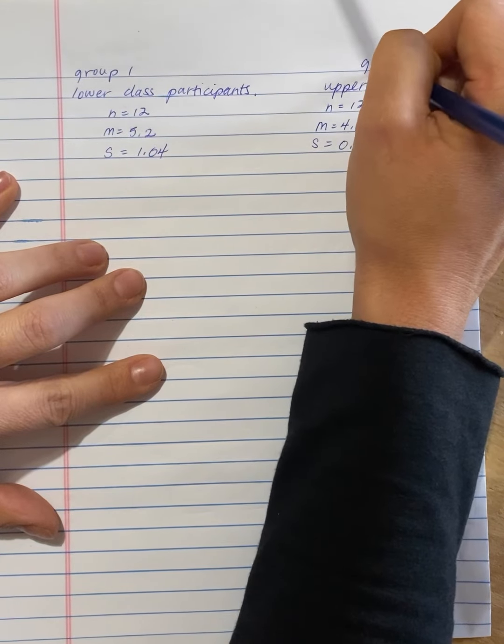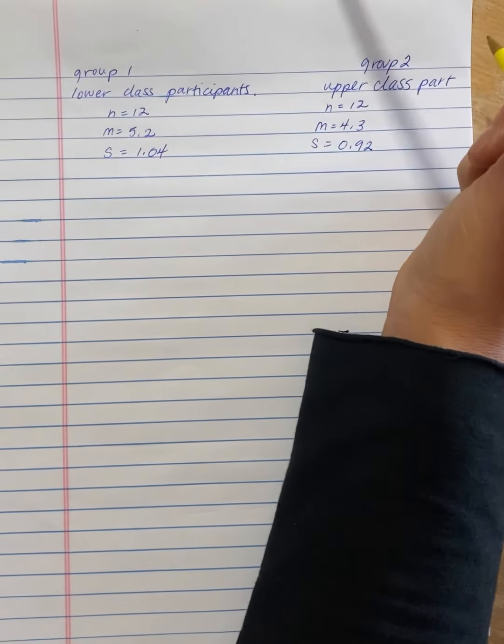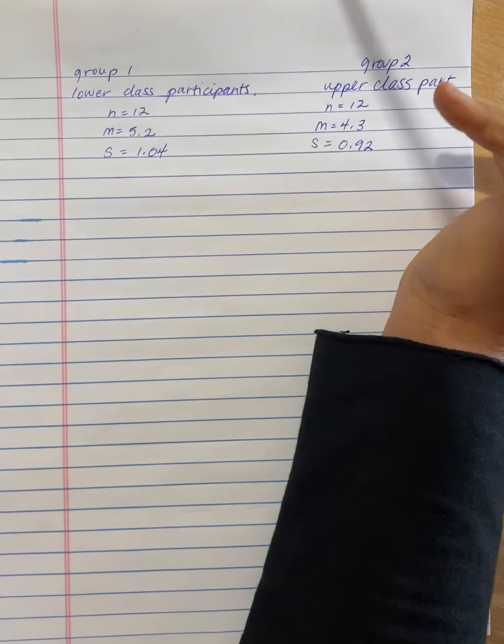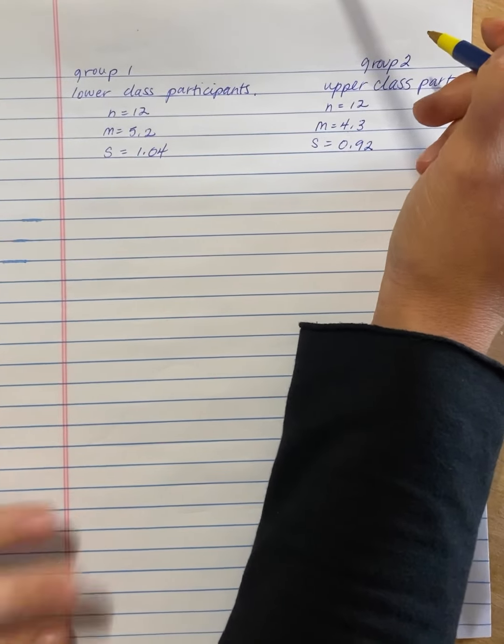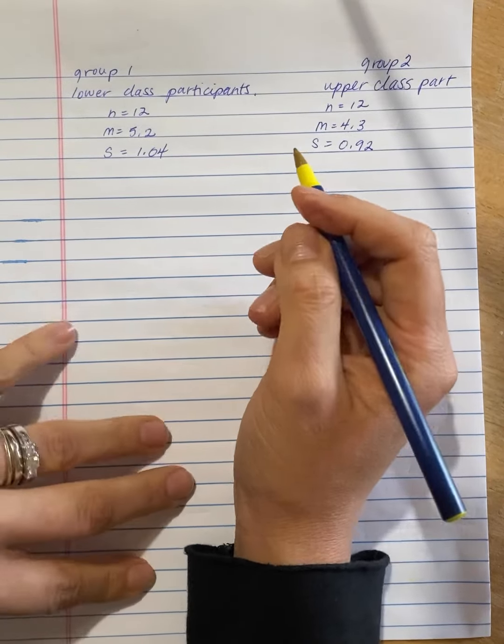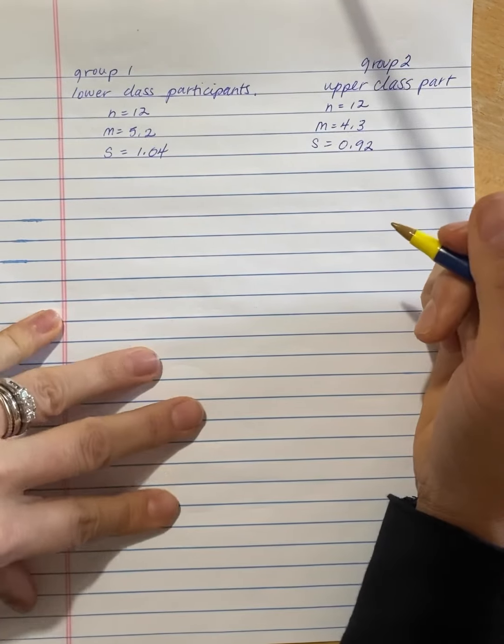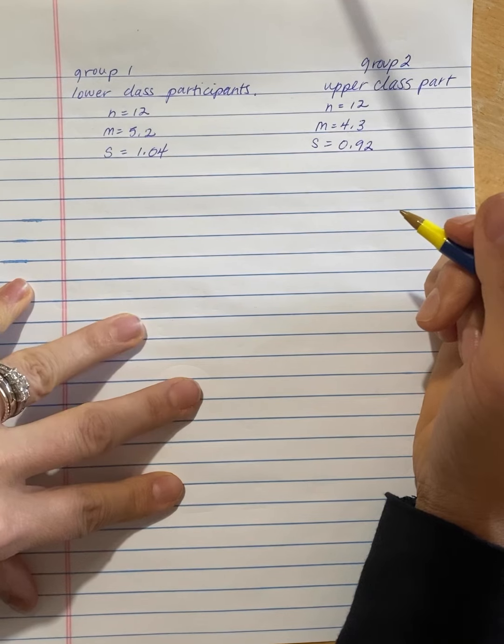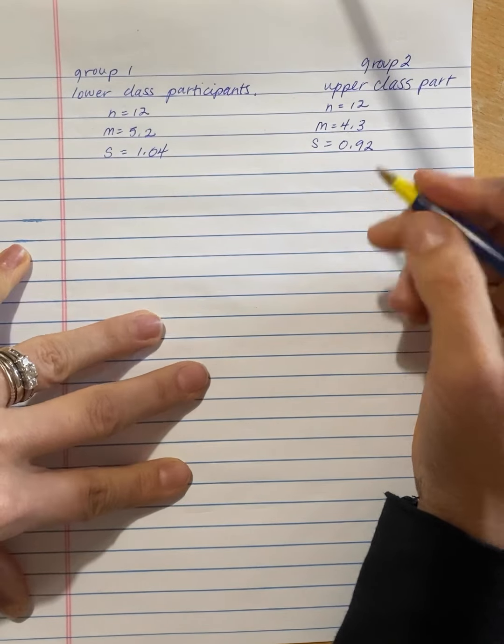And that will be our group two. Which one's group one and which one's group two is largely arbitrary. The other piece is: are the data sufficient to conclude that there is a significant mean difference between the two economic populations?